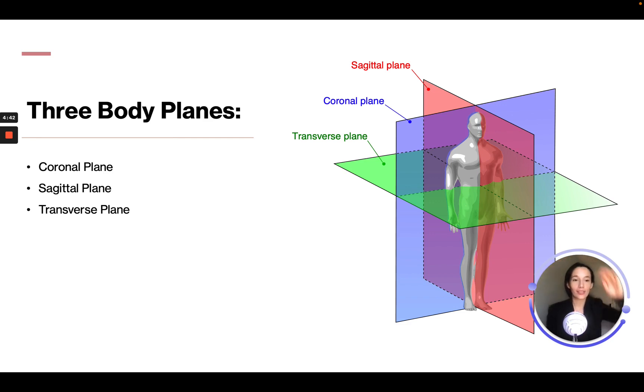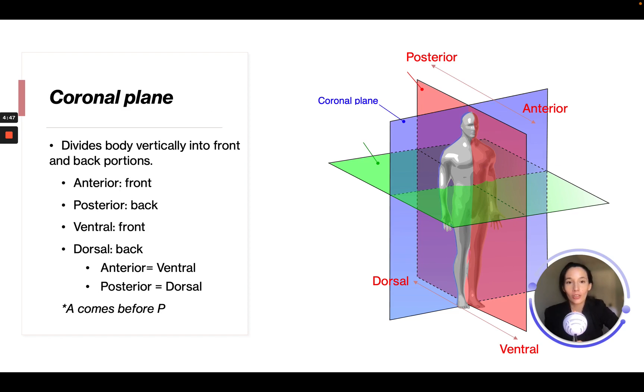So the coronal plane—that is the blue—is dividing the body vertically into front and back portions. Now some words you will need to know for the ATIT's exam is that anterior is going to be the front, because again, it's cutting the body in the front and the back. So anterior and ventral both mean the front. Posterior and dorsal both mean the back.